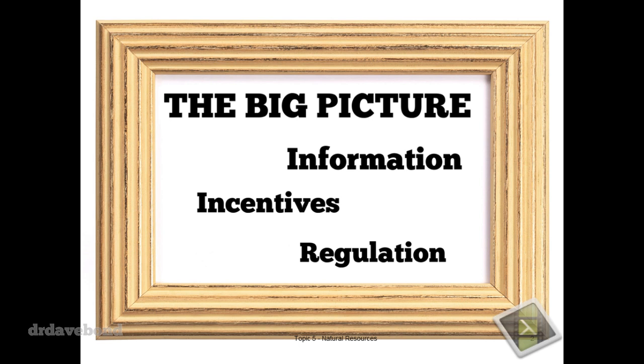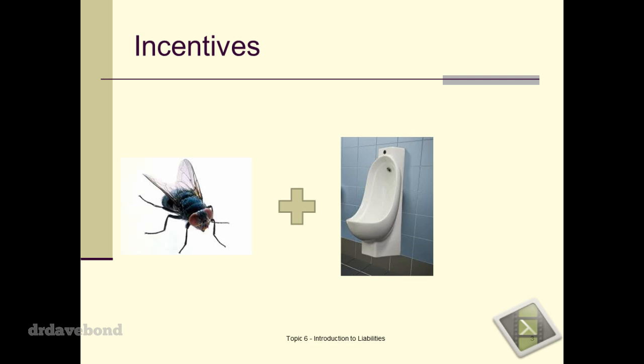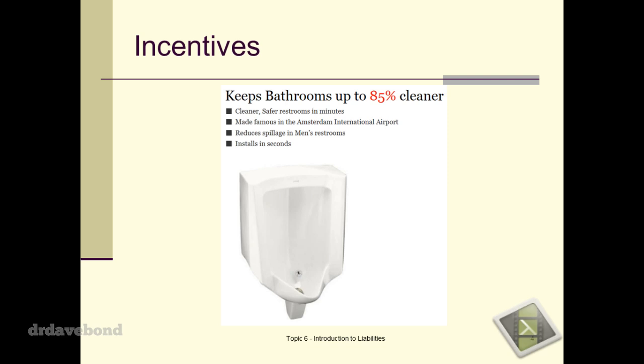Before we get into the actual topic, I have a couple of questions. The first: it's a fly. The second: it's a urinal. When you add these two things together, you get a business idea. This is called urinal fly — the idea is it keeps things cleaner. If you give people a target to aim at, they generally will. It started off in Amsterdam Airport and has spread worldwide, with quite good results.